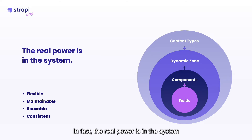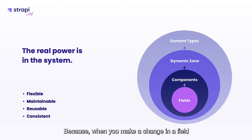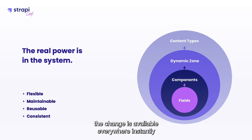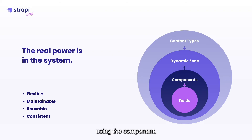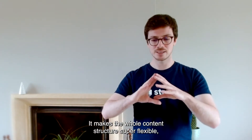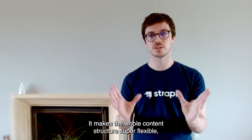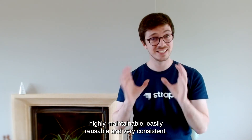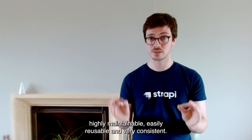In fact, the real power is in the system and the implementation. Because when you make a change in a field which is part of a component, that change is available everywhere, instantly, in every single dynamic zone and content type using the component. It makes the whole content structure super flexible, highly maintainable, easily reusable, and very consistent.